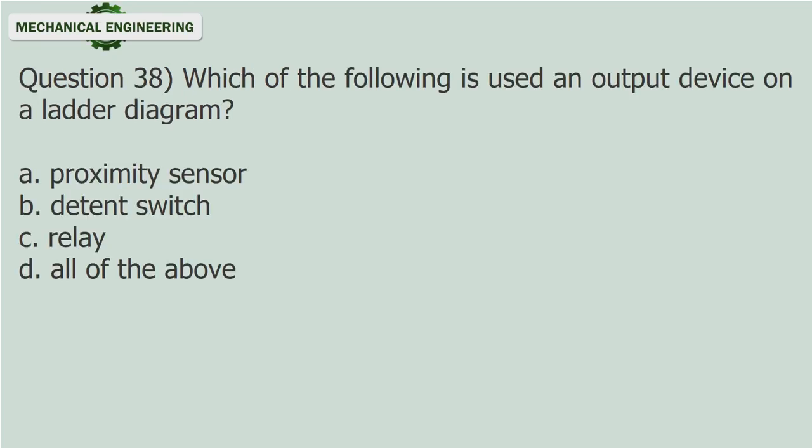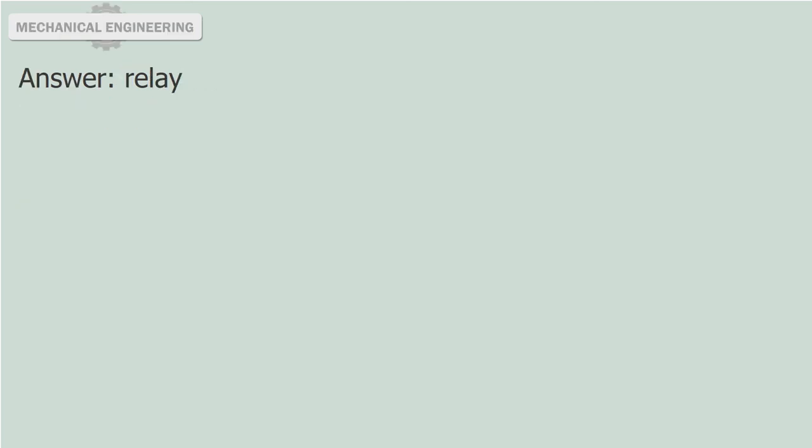Question 38: Which of the following is used as an output device on a ladder diagram? A. Proximity sensor. B. Detent switch. C. Relay. D. All of the above. Answer: Relay.